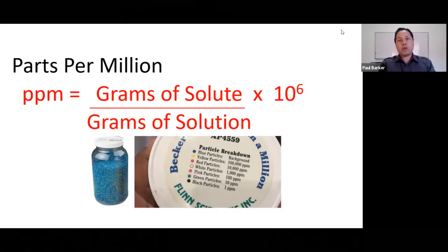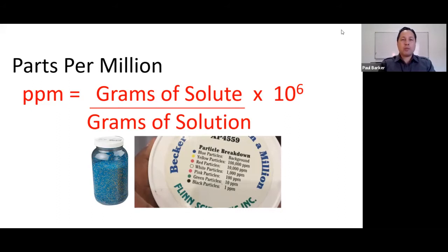Parts per million is another unit used to measure the concentration of a solution. The formula is: grams of the solute divided by grams of the solution, multiplied by 1 million. Parts per million is usually used to measure something very, very small, such as how much chlorine needs to be added to a swimming pool. Let's take a look at some examples of how to solve for parts per million.